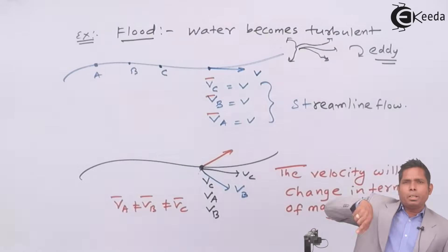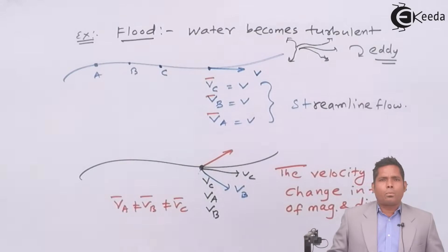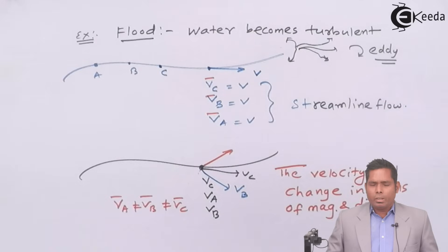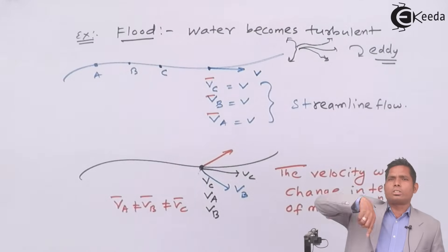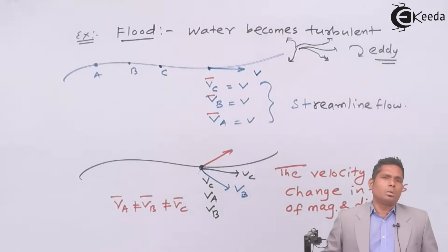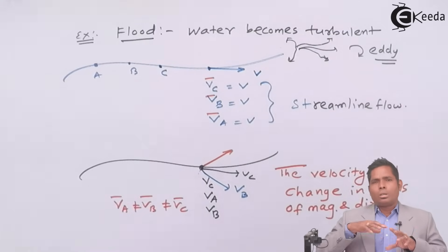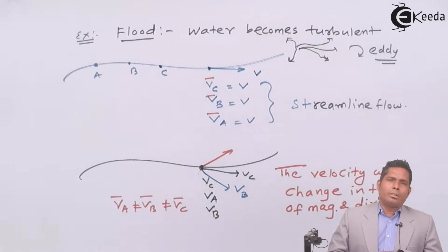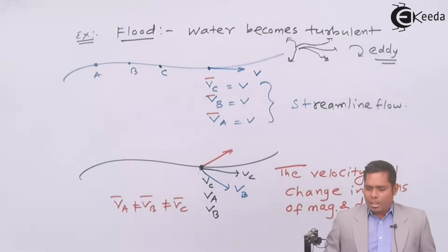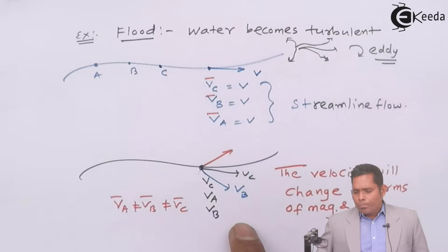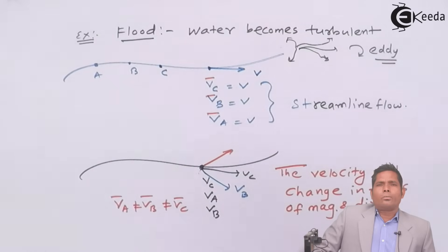It might also rotate giving rise to eddies. So that would be a rotational motion of liquid. The molecules will have the rotational motion giving rise to whirlpool, and the pattern of flow cannot be defined. The directions of molecules will be random, so that type of flow is known as turbulent flow.